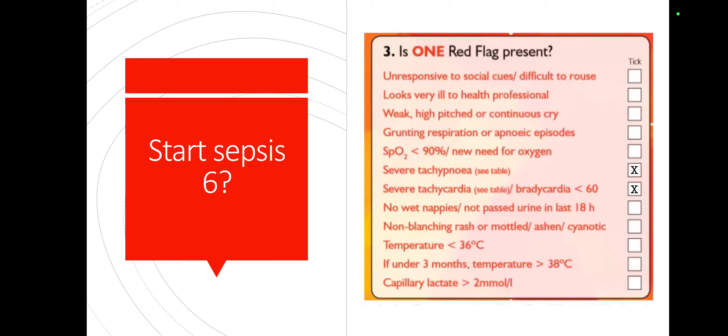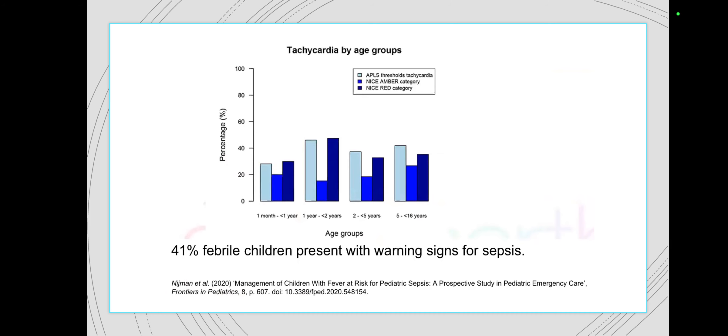Consider another scenario: a child with severe tachycardia, severe tachypnea, and saturations below 90% — does it have to be sepsis? Doesn't that happen with severe bronchiolitis, or with children in heart failure? And remember Sepsis 6 says to give a fluid bolus, but what if the child is in heart failure and can't tolerate fluid boluses? So it's a difficult question — where do we draw the line? A study published in 2020 focused on management of children with fever at risk for pediatric sepsis in pediatric emergency care.